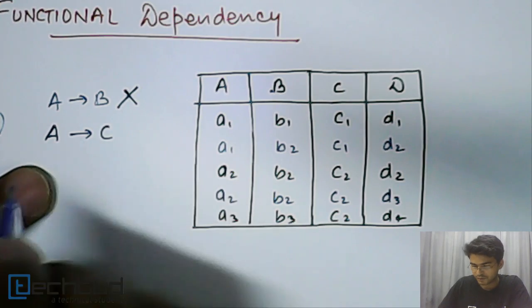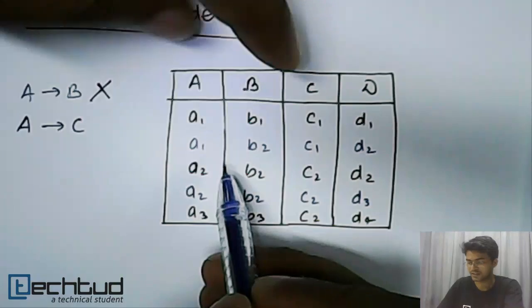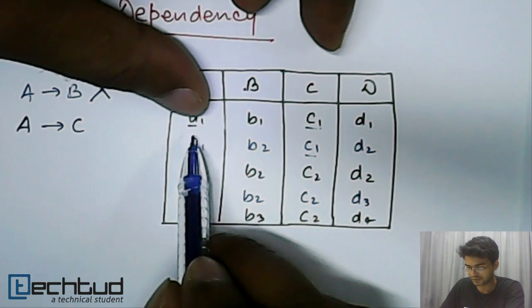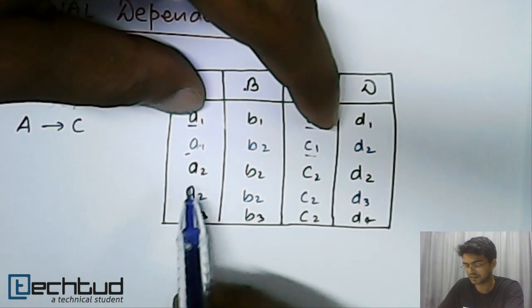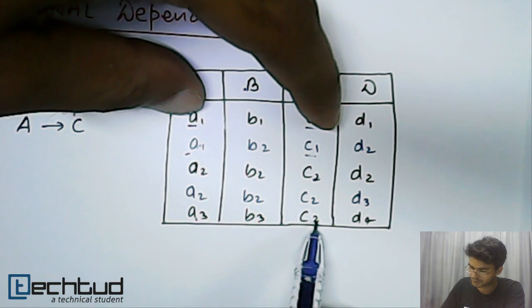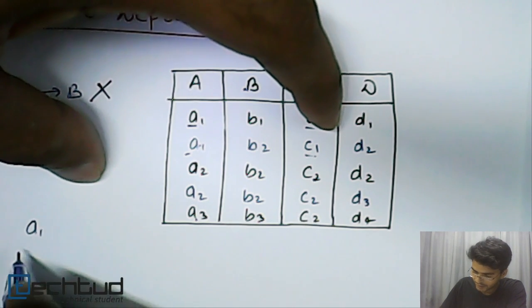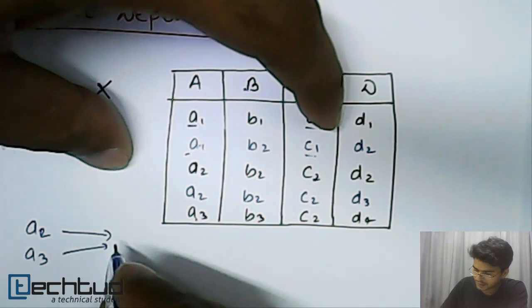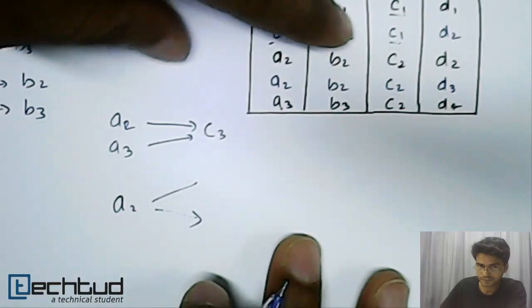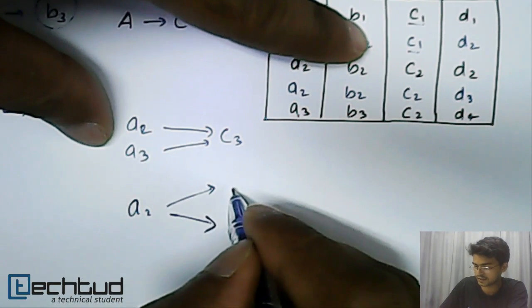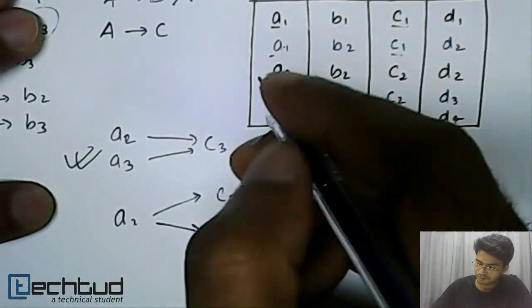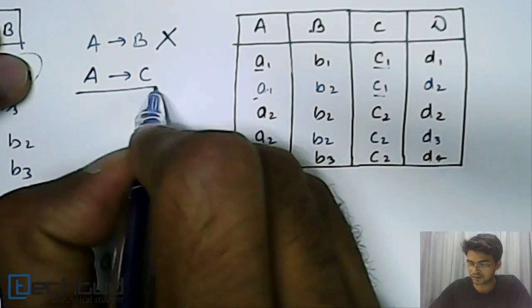We will check for A functionally determines C. Again our approach will be negative, we will try to discard this. Let's compare these two columns. Here a₁ corresponds to c₁, a₁ corresponds to c₁. This is correct. Here a₂ corresponds to c₂, again a₂ corresponds to c₂, and a₃ corresponds to c₂. So we can have two elements, a₂ and a₃, deriving the same element c₂. But we cannot have the reverse thing, that a₂ is determining two elements, let's say c₃ and c₄. This is wrong, but this is always correct.